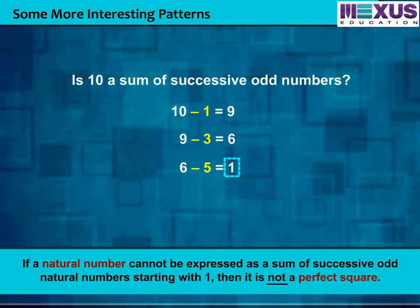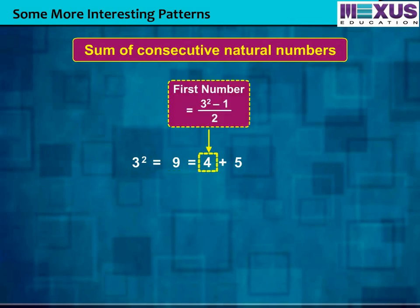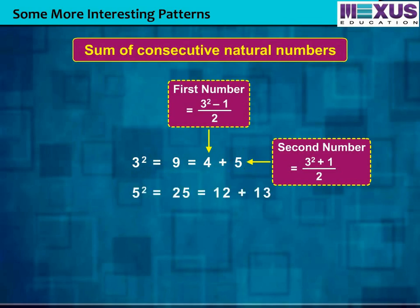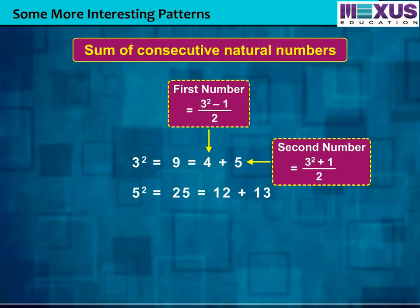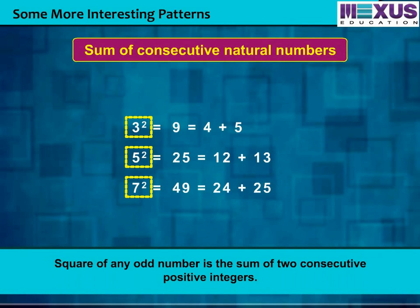Let us now understand another pattern: sum of consecutive natural numbers. For example, 3 square is equal to 9, and 9 is expressed as the sum of 4 and 5. Going further, 5 square is equal to 25, and 25 is expressed as the sum of 12 and 13. Similarly, find 7 square, 8 square, and so on. Therefore, we can say that the square of any odd number is the sum of two consecutive positive integers.